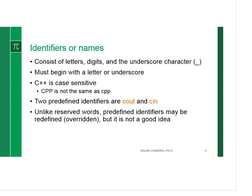The name of the identifier is very important in programming language. It always begins with a letter or underscores. It is case sensitive. What it means is capital CPP is not the same as lowercase CPP. Two predefined identifiers are Cout and Cin. Unlike reserve words, predefined identifiers may be redefined, but it is not a good idea.